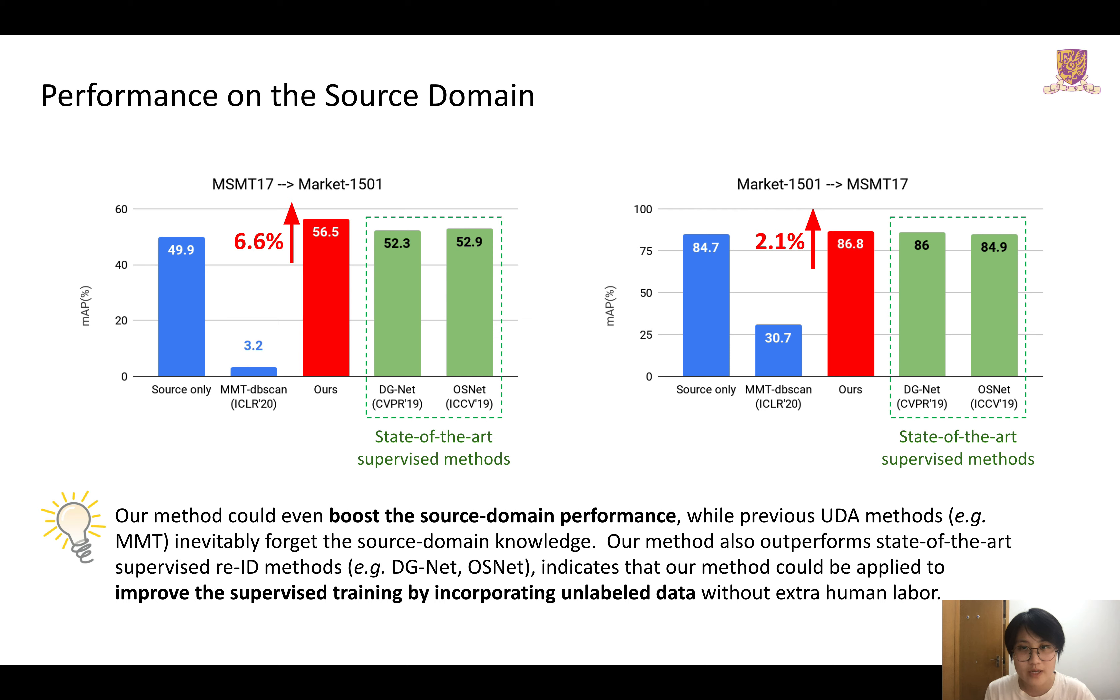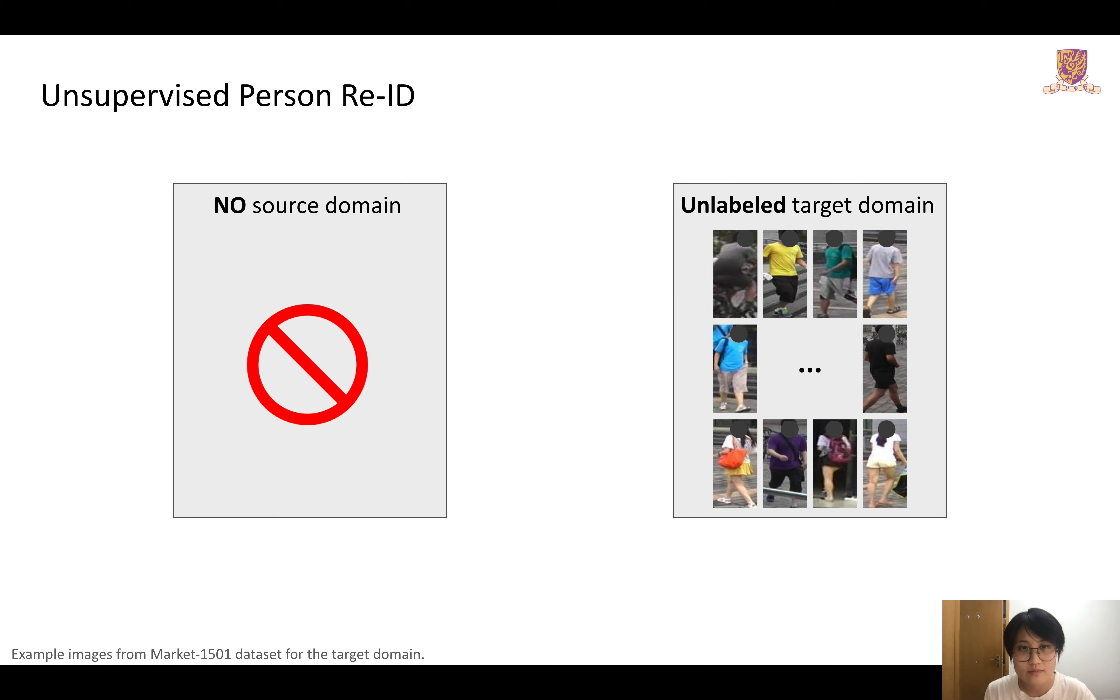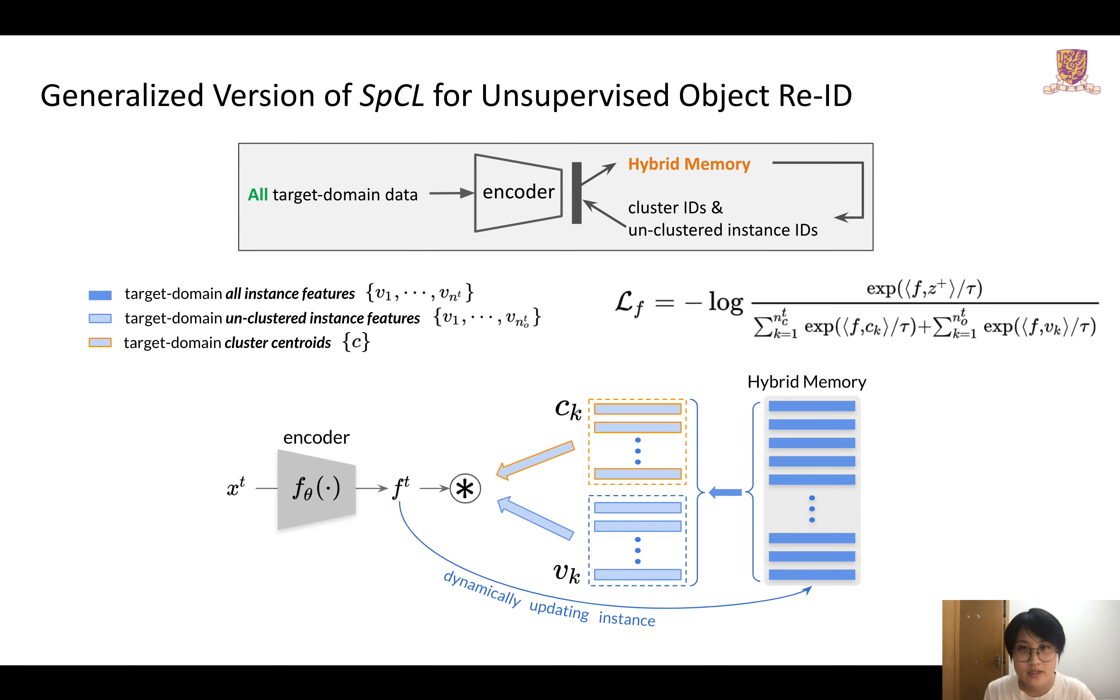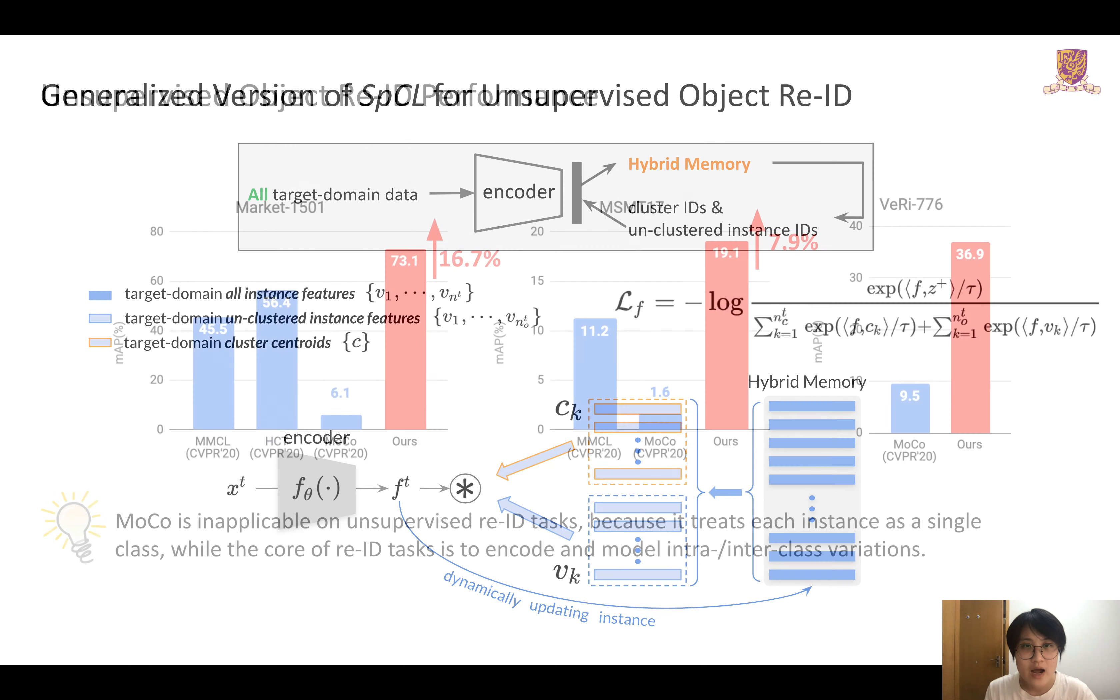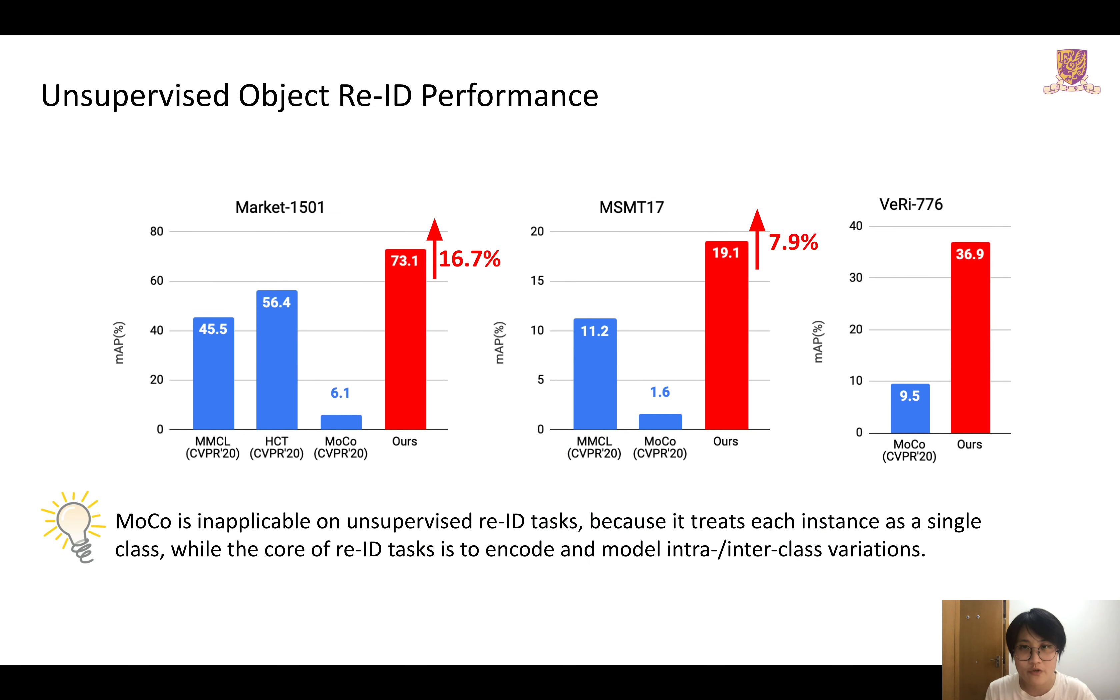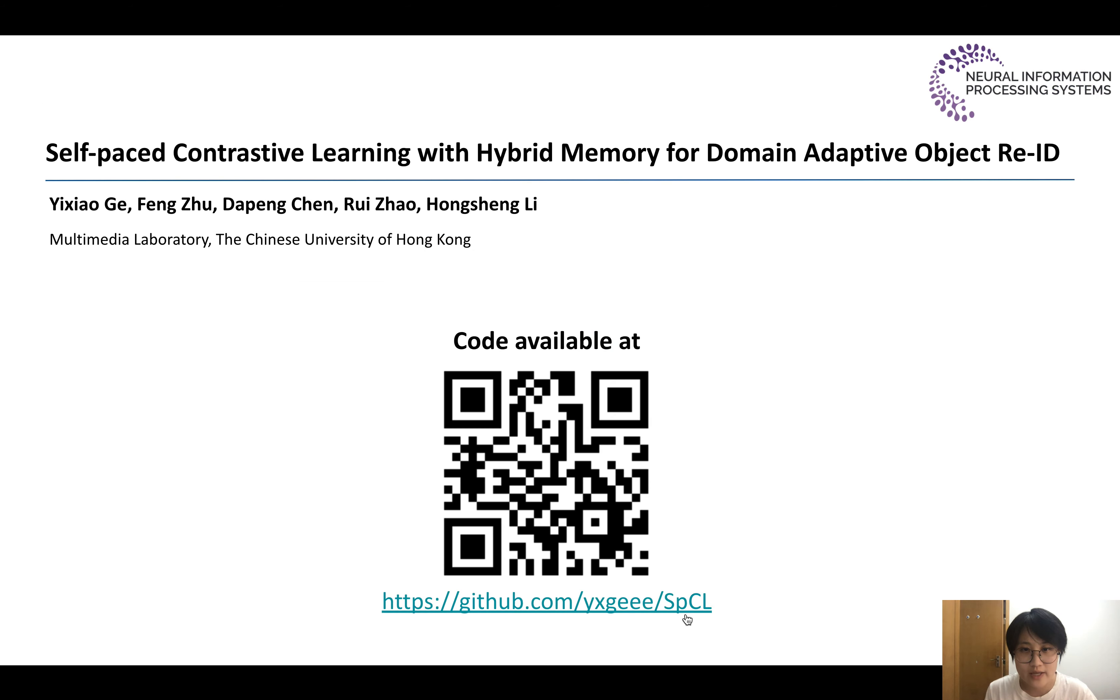Another stream of research focuses on training the Re-ID model without any labeled data. Our method can be easily generalized to such a setting by discarding the source domain classes from both the hybrid memory and training objective. Our method considerably outperforms state-of-the-art results by up to 16.7% improvements. Thank you for your interest in our work.